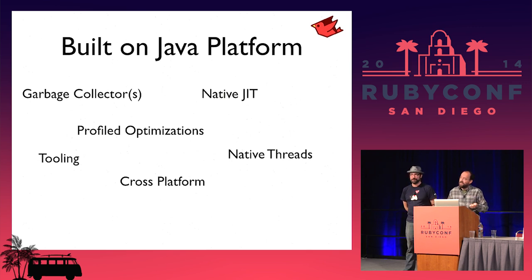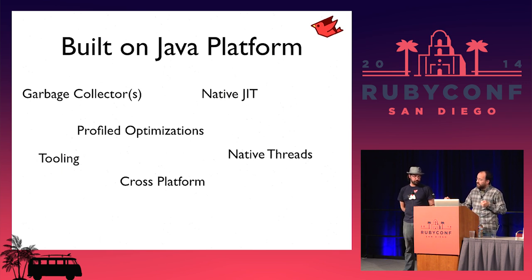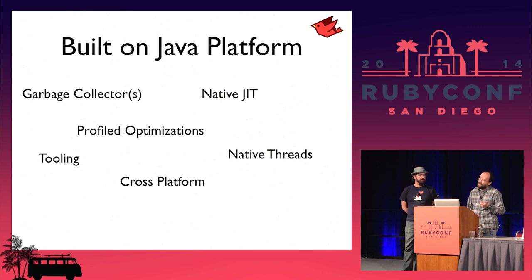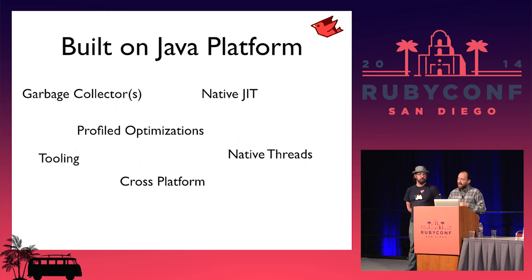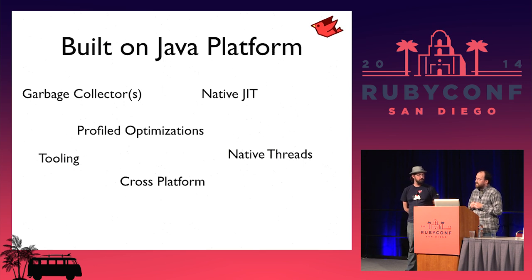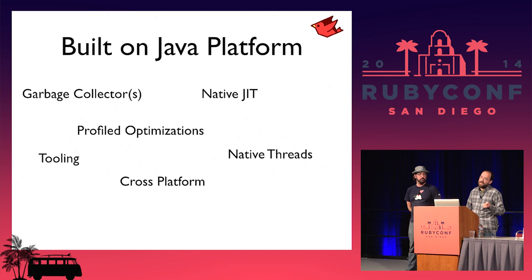If you have an issue with garbage collection, you can go and change your garbage collector and tune different parameters to fix that. It's got an awesome JIT, and it does a bunch of profiled optimizations. We run on crazy platforms — OpenVMS, IBM mainframe. And probably the most visible change against CRuby is that we fully can utilize native threads because the Java platform provides native threads.